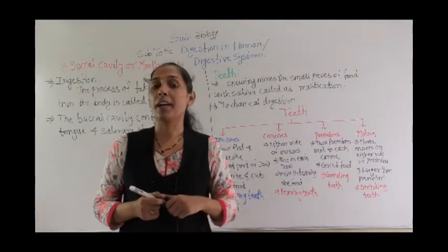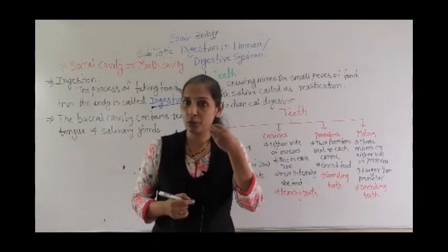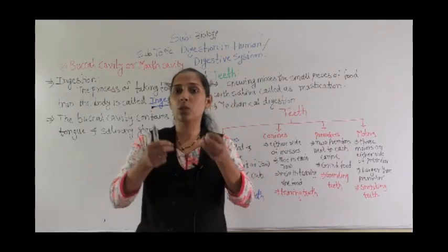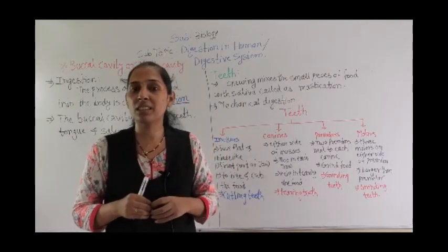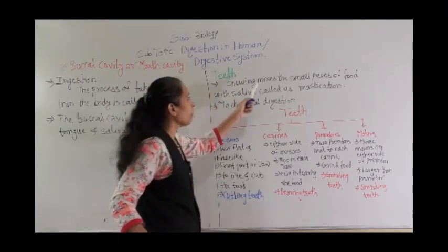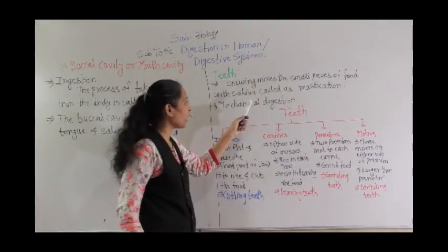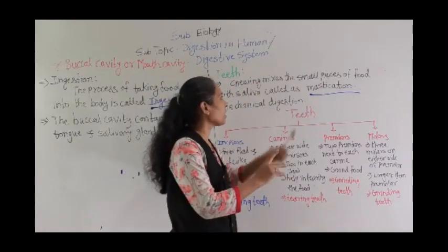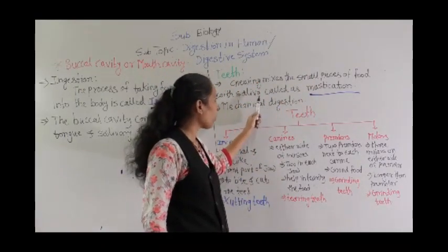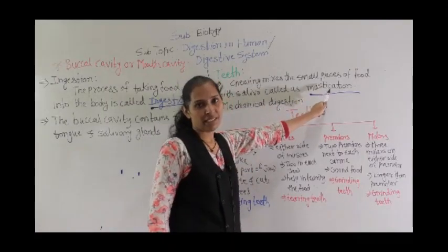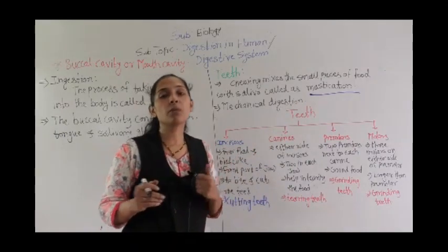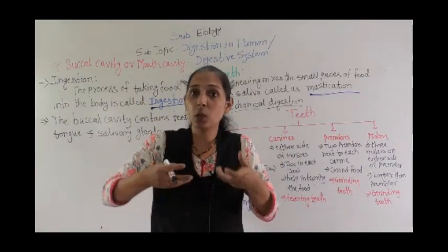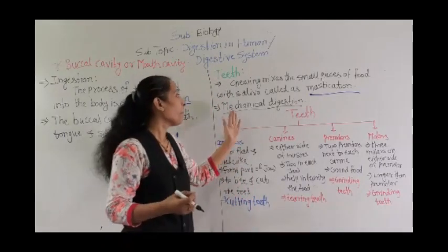Teeth play a very important role in the process of digestion. When we bite the food, it breaks into small pieces and helps to mix the food with saliva. Chewing mixes the small pieces of food with saliva — that process is called mastication. The digestion of food that happens in the mouth is called mechanical digestion, because we are physically chewing the food.